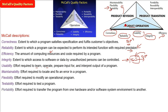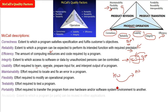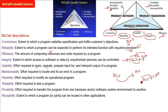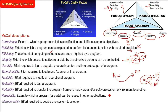Portability refers to the effort required to transfer or perform transition from one hardware or software configuration to another. This comes under product transition. Reusability is whether parts of the program may be directly reused in other applications. Interoperability is the effort required to interface and couple one system with another — their interconnectivity.